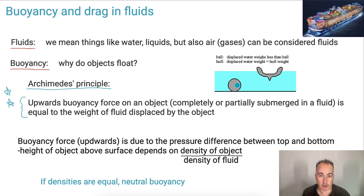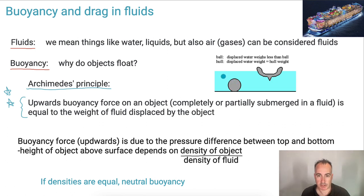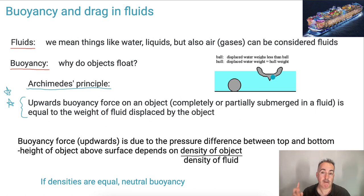If you have a ball and this hull-shaped object, and let's assume they're made of the same material and same amount of material — the ball, because it's spherical, will displace some water when you put it in. But if you put this hull shape into water, it will also displace water — in fact, it'll displace more. And if it has enough weight of displaced water, it can be enough to make it float. Buoyancy is all about displaced fluid.